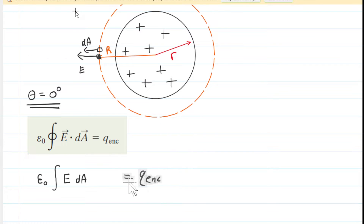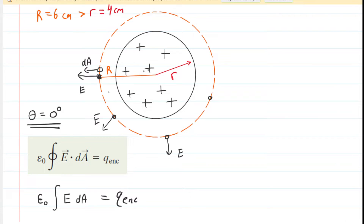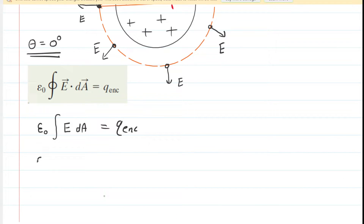Let's speak about the electric field at the Gaussian surface. At any point on the Gaussian surface, the electric field magnitude is going to be a constant value. We know that because the charge within this sphere is uniformly distributed. If the charge is uniformly distributed, then the electric field at any point on our Gaussian sphere is going to have a constant value, and because it has a constant value, we can factor it out of our integral.